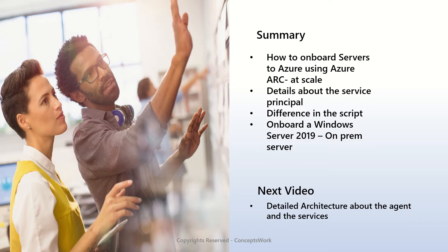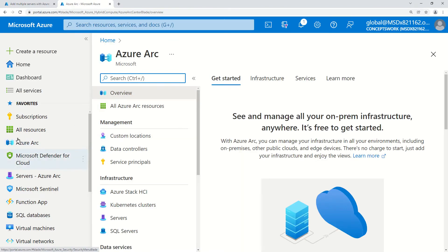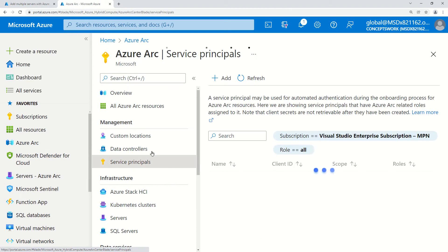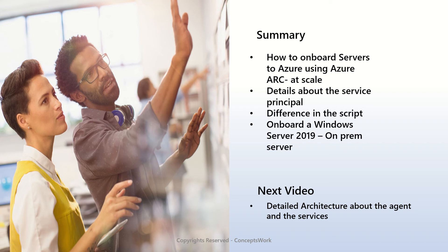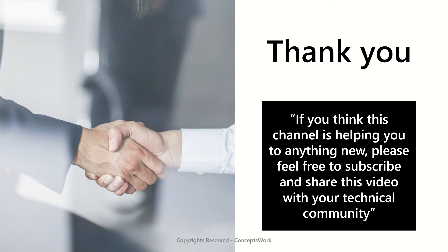To summarize: we discussed how the Azure Arc at-scale process works, the difference involving service principals — how to create one either before generating the script via the root Azure Arc console under Service Principals, or on the fly during script generation — and we onboarded a Windows Server 2019 on-premises machine to Azure Arc. In the next video we'll discuss the detailed architecture of the agent and the services that get created, and which service is responsible for which process on the server. If this channel is helping you learn, please subscribe and share with your technical community. Thank you so much for your time.